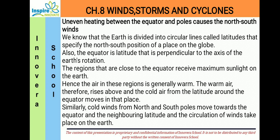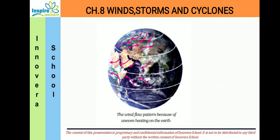The warmer air rises above, and the cold air from the latitudes around the equator moves into that place. Similarly, cold winds from the north and south poles move towards the equator and the neighboring latitudes, and the circulation of winds takes place on the earth. This is the wind flow pattern due to uneven heating — at the edges we have the north and south poles, and in between we have the equator.